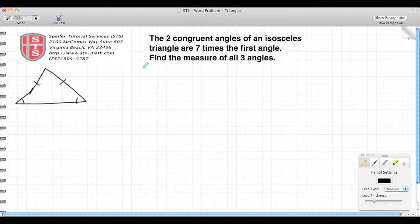As I read the question, we need to find the measure of all three angles. And it tells us that the measure of the two congruent angles are seven times the first angle. Well, since we don't know what the first angle is, I'm going to let x equal that first angle.